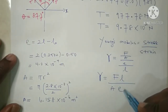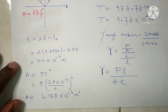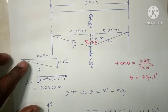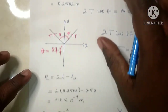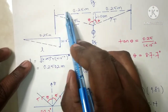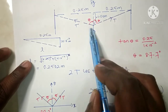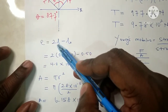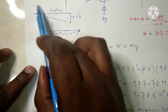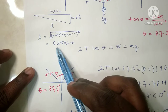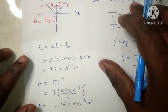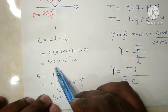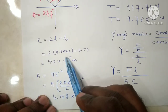The last part is the extension of the wire. Extension equals 2L minus L₀, where L₀ is the original length of the wire, 0.5 m, and L is the length of the hypotenuse of the triangle formed. We have two portions, so we multiply by 2. Using the Pythagorean theorem, L equals 0.2502 m. Substituting into the formula gives the extension as 4.0 × 10⁻⁴ m.